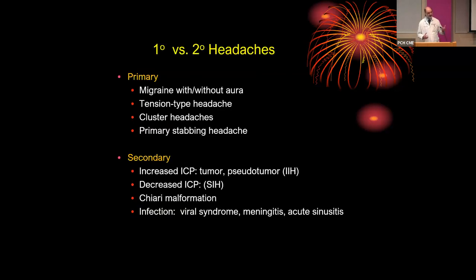Looking at this clinically, we want to talk about primary versus secondary headaches. Within pediatrics, if you're looking at primary headache disorders, migraine is by far the most common thing you're going to see. Tension-type headache may be a little more common in the overall pediatric population, but because those headaches are often mild, they don't always come to the attention of medical professionals. So within clinic, migraine is by far the most common primary headache disorder you'll see. Other types like cluster headaches, trigeminal autonomic cephalalgias, and primary stabbing headaches are very rare.